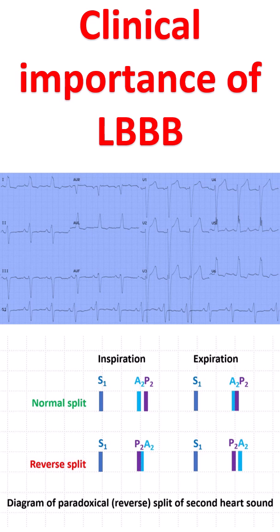Left bundle branch block is usually associated with structural heart disease, unlike right bundle branch block, which may be seen without associated heart disease.